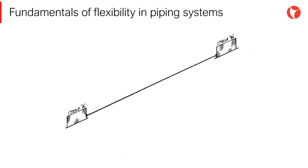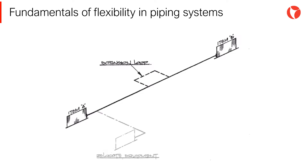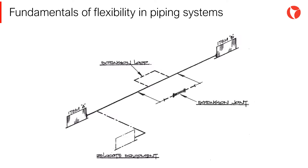As seen in the picture on the screen, the most direct way to connect items A and B would be a straight pipe. Obviously, this way the system would be completely rigid. There are basically two ways to provide flexibility to a piping system: by introducing changes in direction of the system, as a spatial loop, or moving one of the items to be connected. The alternative is to install expansion joints.